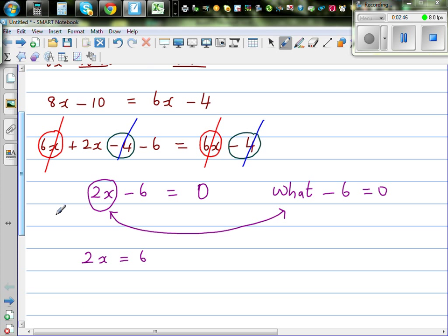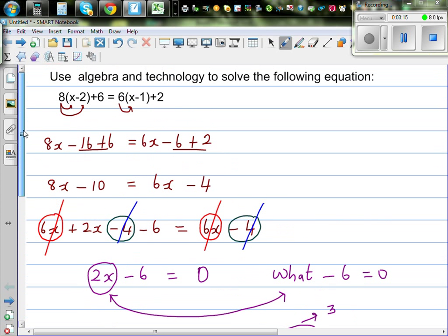Now you need to ask the question, 2 times what gives you 6? Well I know 2 times 3 is 6, so x has to be 3. That means the answer is 3. When x is 3 your left hand side is equal to right hand side. So let's check that.